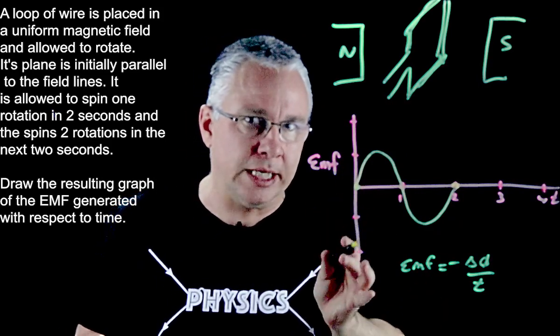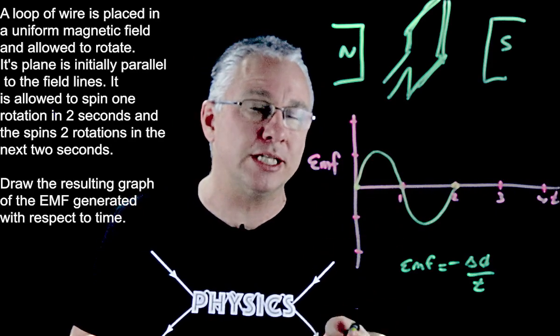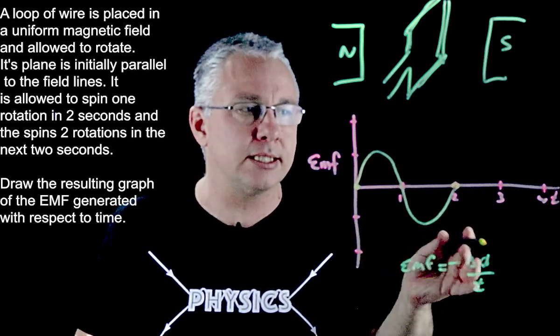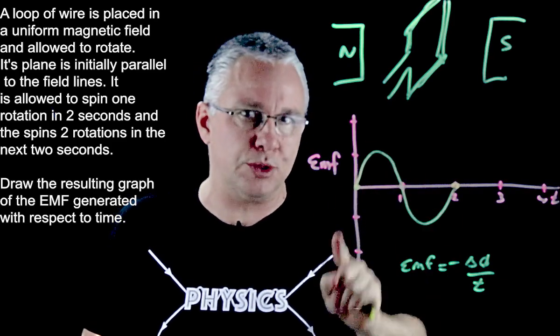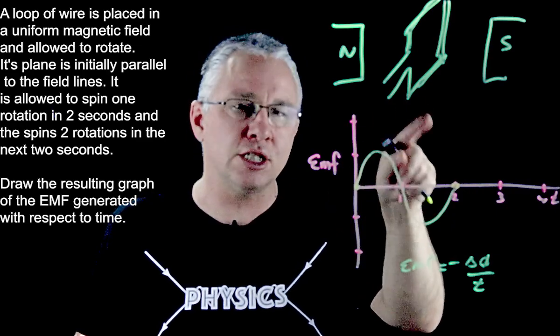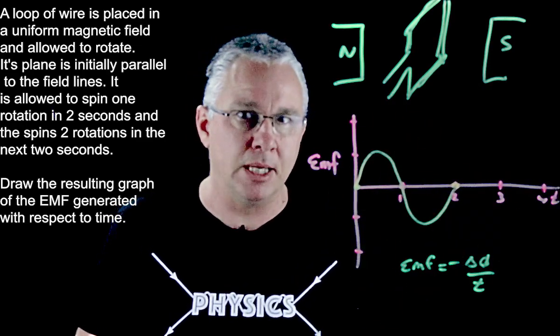But now comes the tricky part. That's the first part. But what now happens is when I turn it twice in the same time period. And here is an important thing. First of all we're going to get two loops here, right? Because the fact that it spins twice I'm going to get two cycles in the same amount of time.